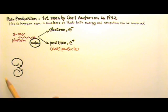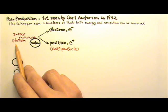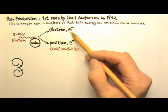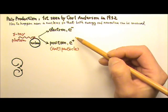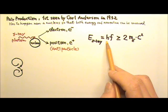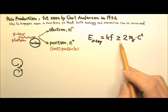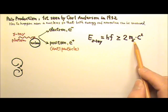This means to have pair production, the photon must carry at least the mc squared of the electron plus the mc squared of the positron. Since an electron and a positron have the same mass, it means the energy of the gamma ray, which means hf of the gamma ray, cannot be less than twice the mc squared of an electron.